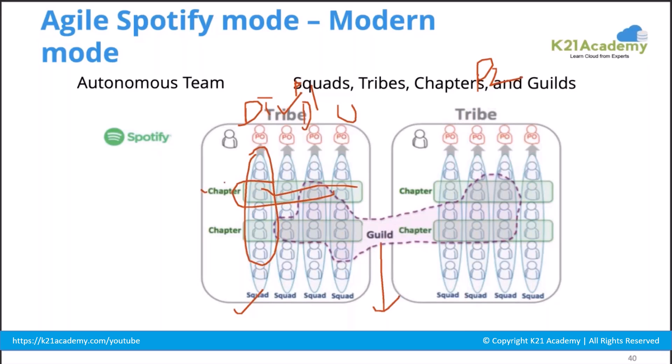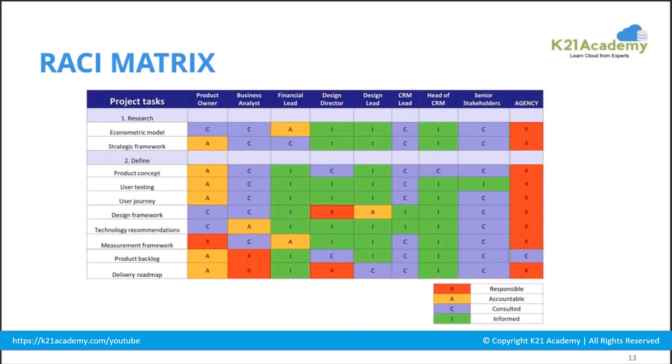At the start of a project there will be collective decisions where the team creates a RACI matrix — listing different task items, different teams, team members, and their roles. It defines who is responsible for delivery, who is accountable, who is consulted, and who is informed. This is done during initial project discussions at the start of the project.